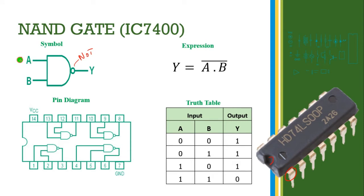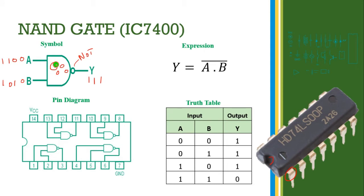If we apply inputs 0, 0, the AND gate output becomes 0. The 0 output is given to the NOT gate, so the output becomes 1. For inputs 0, 1 or 1, 0, the AND gate output becomes 0, and after the NOT gate the output becomes 1. For inputs 1, 1, the AND gate output becomes 1, and after the NOT operation the output becomes 0.